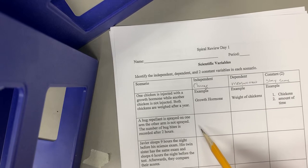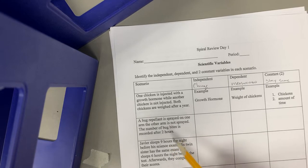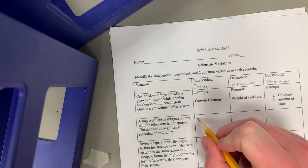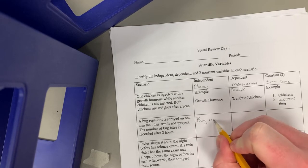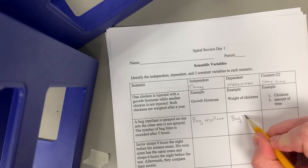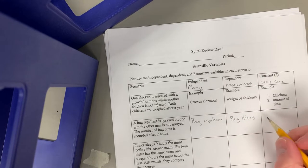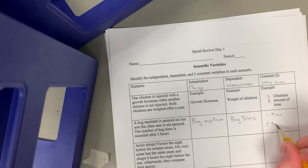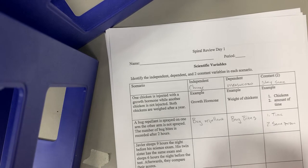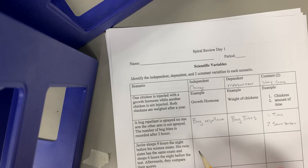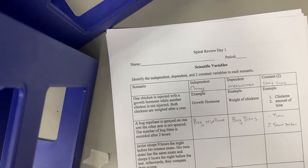For this one, we're looking at a bug repellent sprayed on one arm. The other arm is not sprayed. The number of bug bites is recorded after two hours. So the thing that we are changing is the bug repellent. The thing that we are measuring is bug bites. Our constants: one is our time — two hours — and the other is that we are going to use the same person, because everyone is a little different with bugs.